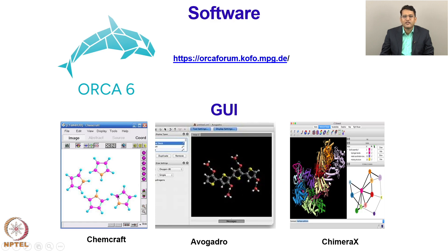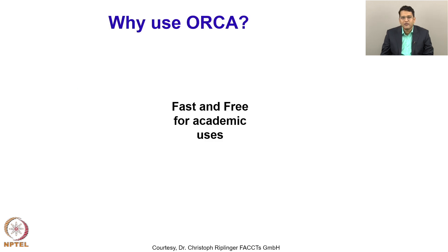Avogadro and Chimera-X are free software. Although Chemcraft is a paid software, you can get a six-month free trial version, so in this course you can use that free trial version. Now, why use ORCA? There are many other quantum chemistry software packages available. The first advantage with ORCA is that it is very fast and it is free for academic use, so you can download this software for free. If you are an industrial user, then you need to contact FACCTS GmbH, which deals with the industrial license of ORCA.